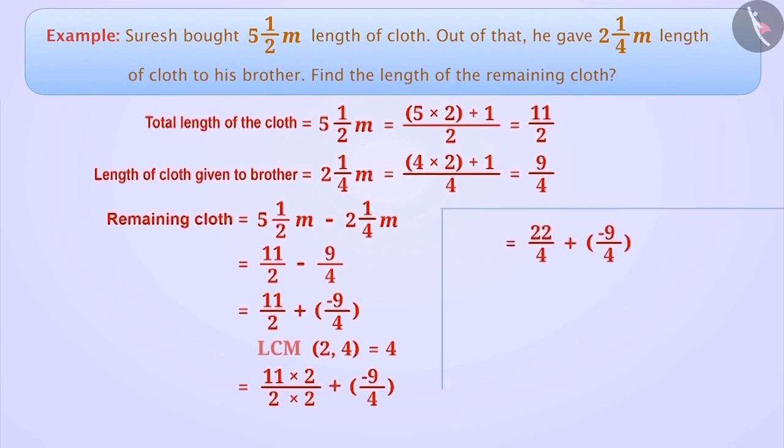Now, denominators of the two rational numbers are equal, so we add the numerators and keep the denominators the same. Thus, we say that Suresh has 13/4 meter, which is 3 and 1/4 meter length of cloth left.